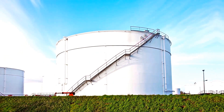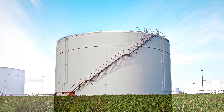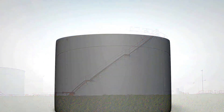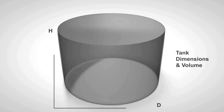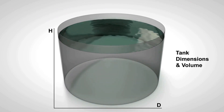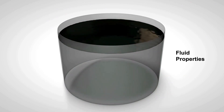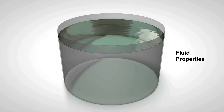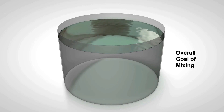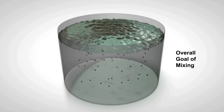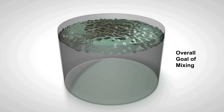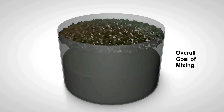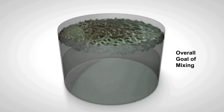We will transform your tank into a digital model and then analyze your blending requirements based on three specifications: starting with tank dimensions and volume, fluid properties, and finally your overall goal of mixing, such as suspension of solids, turnover time for blending, or eliminating stratified layers.